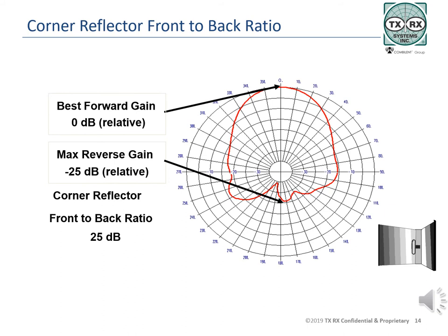Using the example corner reflector pattern, we see that its front-to-back ratio is approximately 25 dB, which is better than the Yagi shown on the previous slides. If we use the pattern value shown, the front-to-back ratio would be 25 dB less signal coming in on the back of the corner reflector than on the front. If this specification is important to the system design, it would be best to consult the published patterns or contact the manufacturer for more detailed information. Local signal reflections at the site can severely impact the actual front-to-back ratio. Typically, corner reflector antennas have a much smaller back lobe or reverse gain than other directional antennas, but the pattern in both directions must be considered before putting one into the system design.